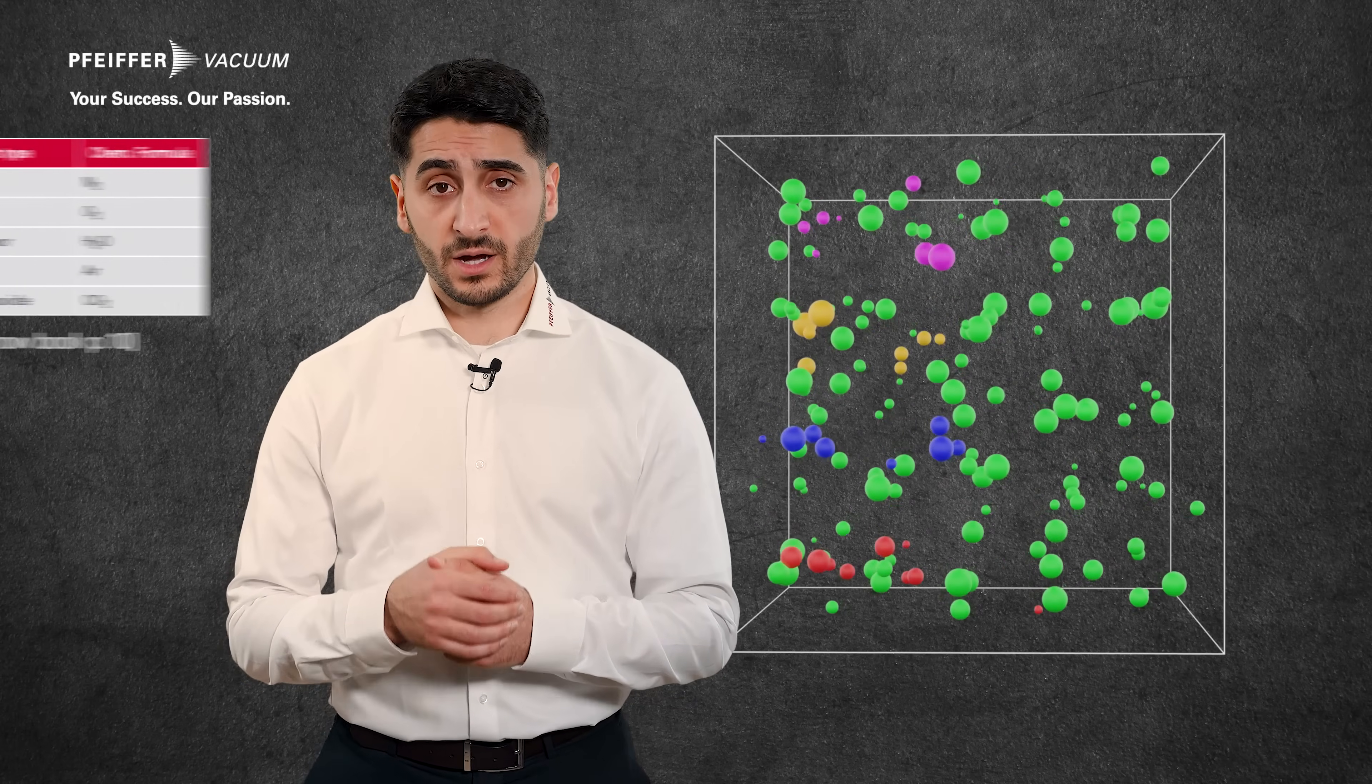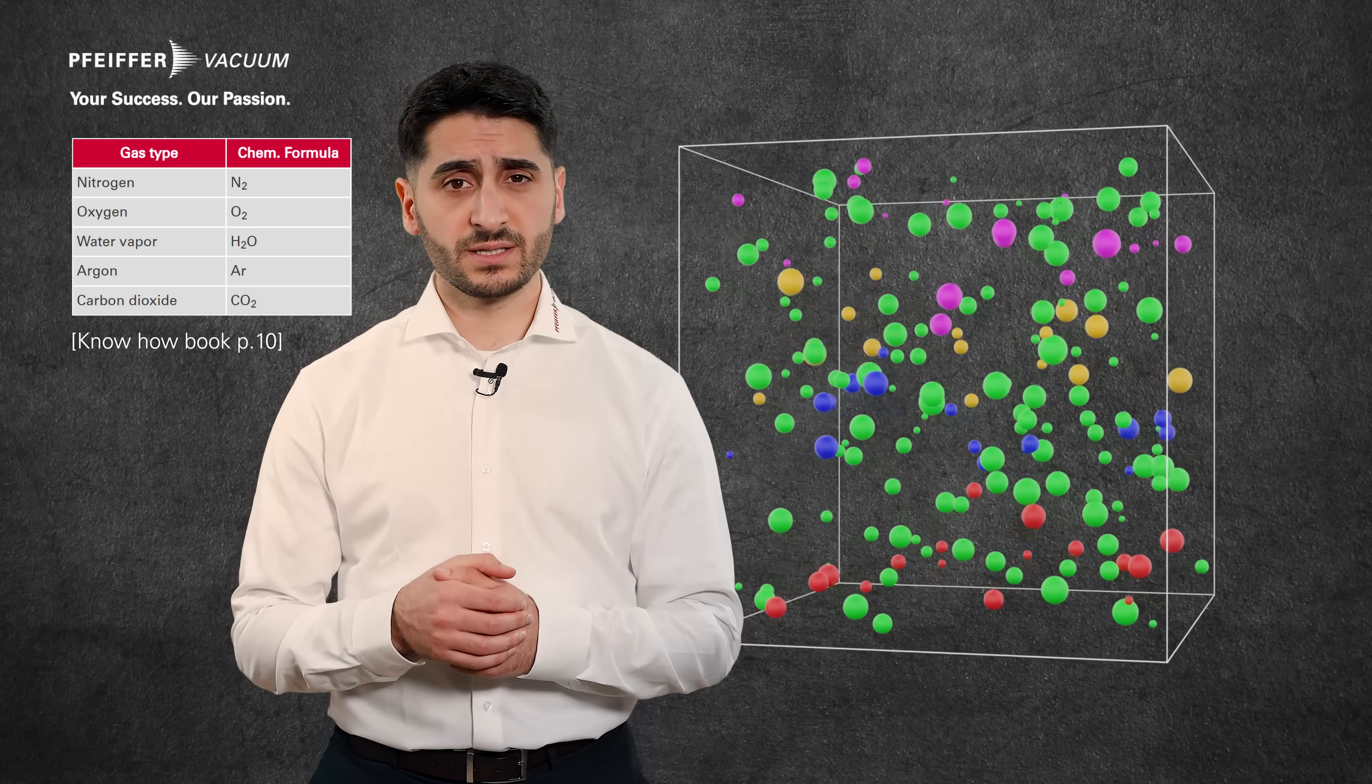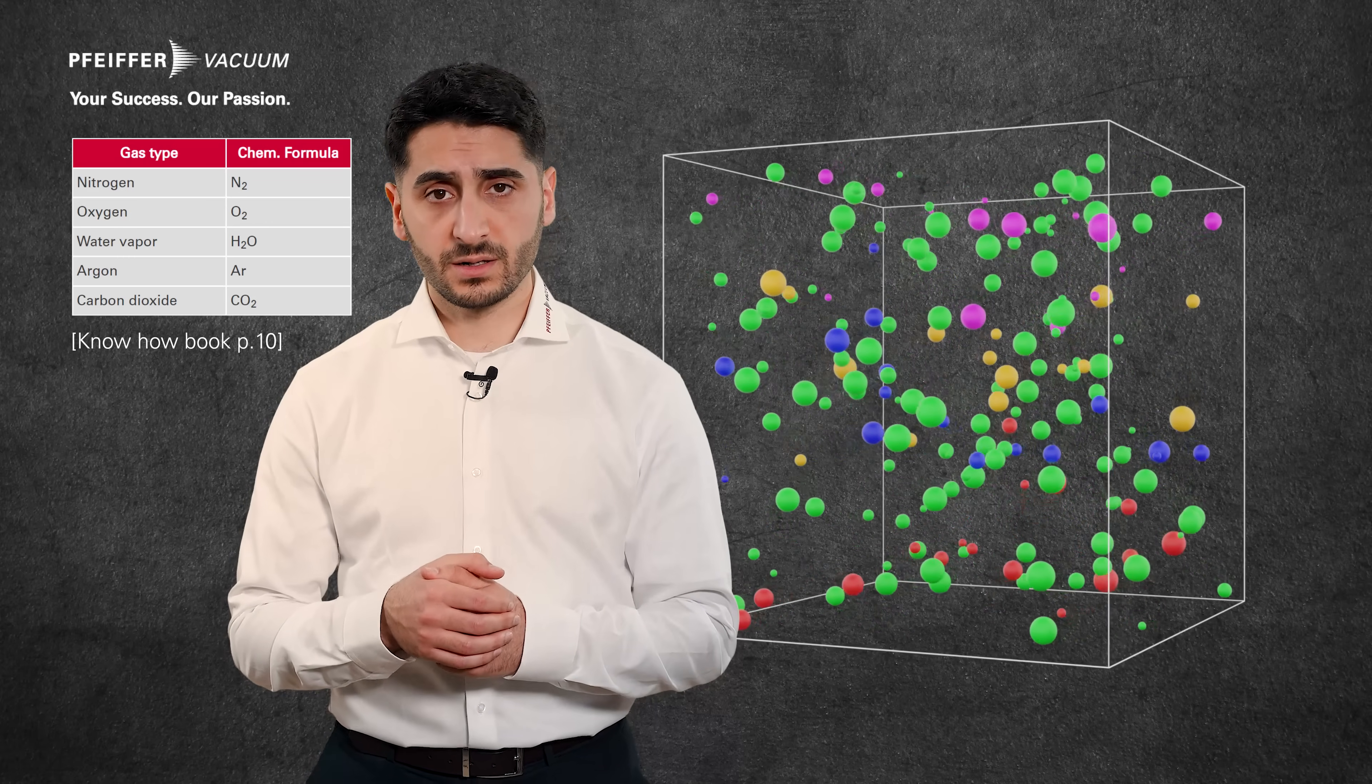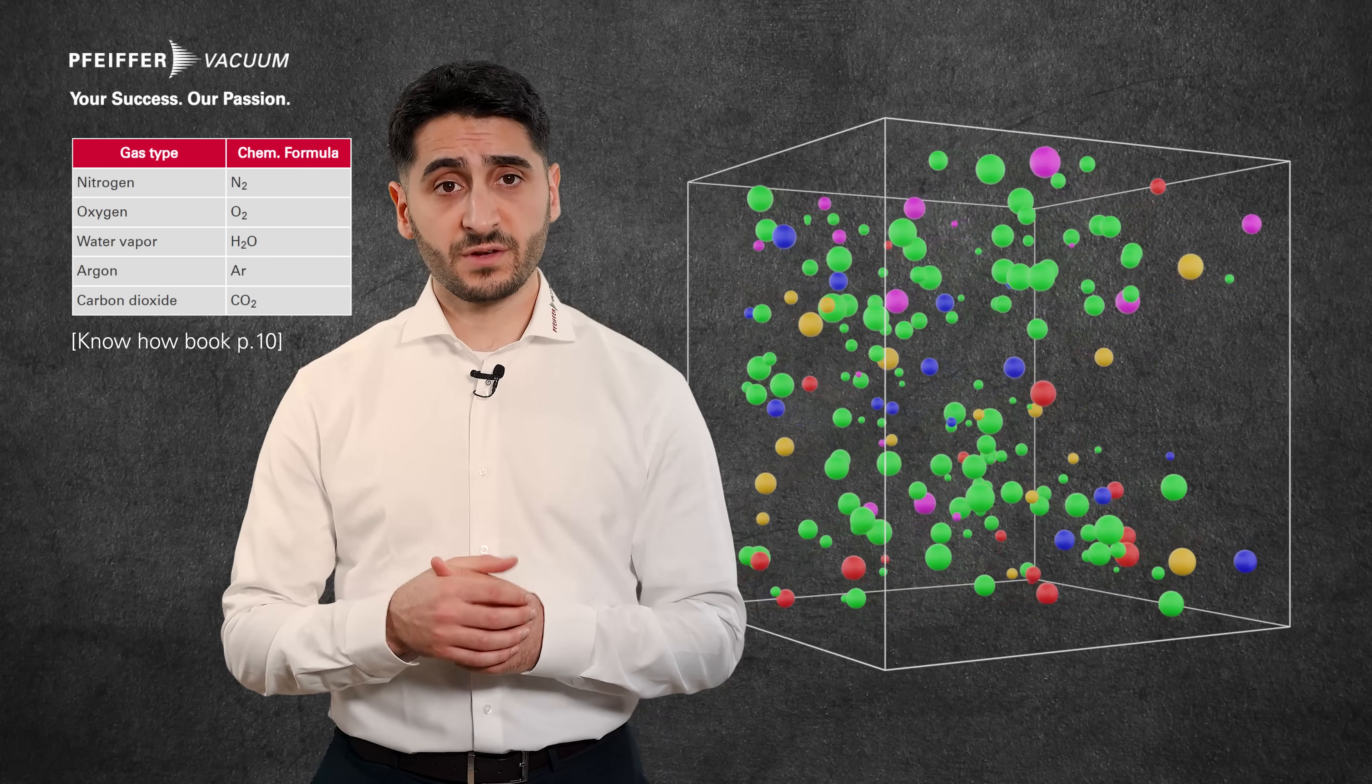Let us assume that there is air in this volume. Air consists mostly of nitrogen and oxygen. It also contains small amounts of water vapor, argon, carbon dioxide, and many other gases. Air is therefore a mixture of gases.